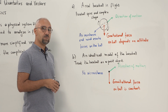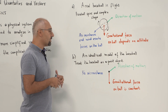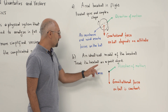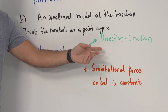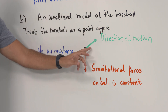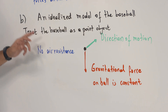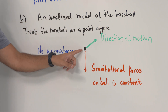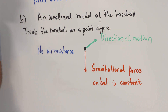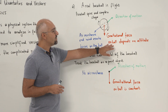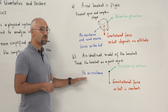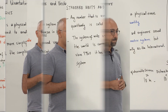In our physics problems this semester, we are going to idealize the model based on a couple of main concepts. We treat our baseball as a point object, shown by a point. The green arrow shows the direction of motion. The red arrow shows the gravitational force on the ball, but it is constant — in real life it changes with altitude — and we ignore the air resistance.